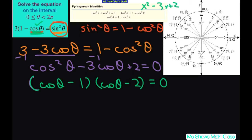And now we're going to set each piece equal to 0. So we have cosine theta add 1 to both sides equals 1 and we have cosine theta equals 2.